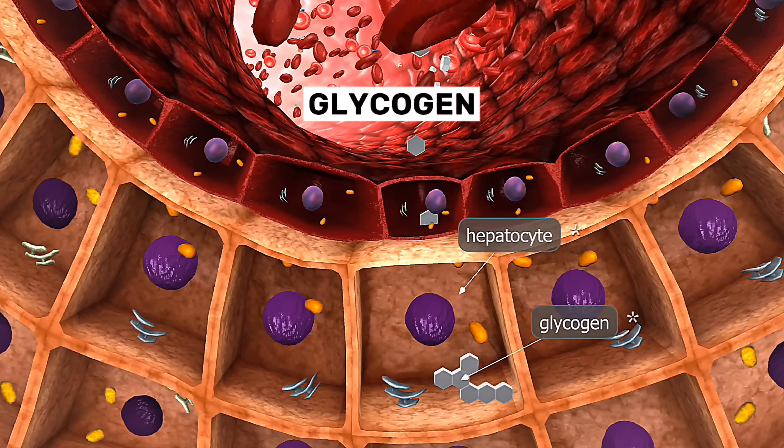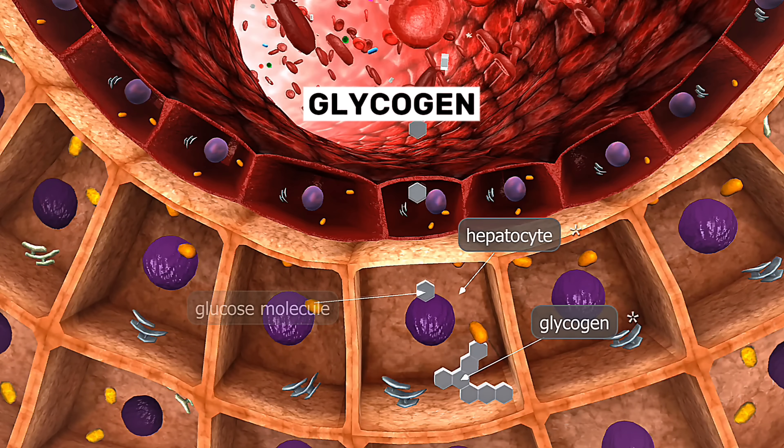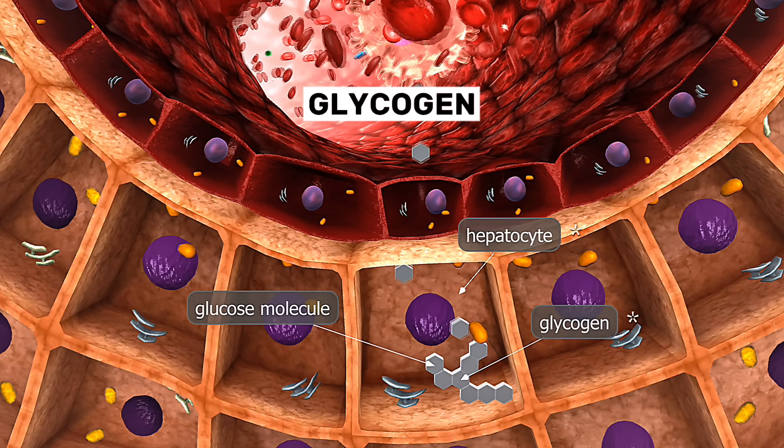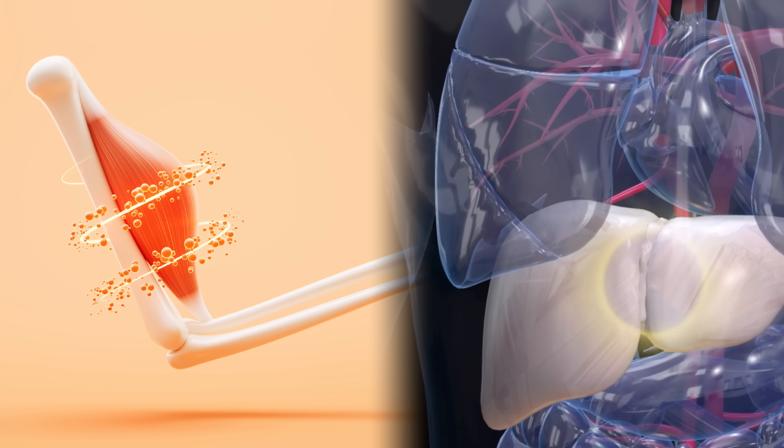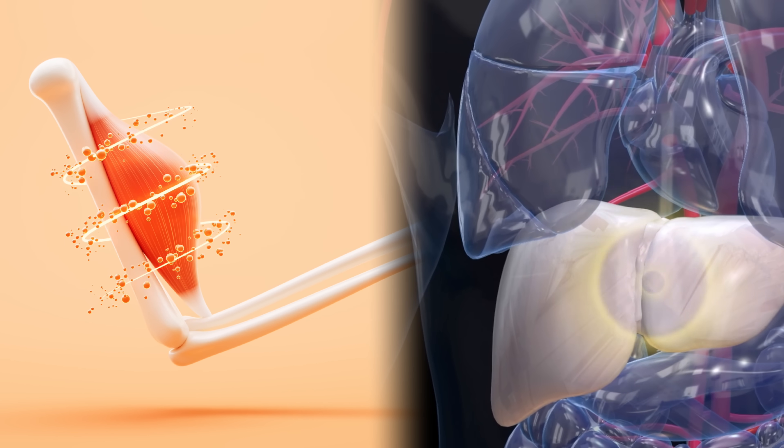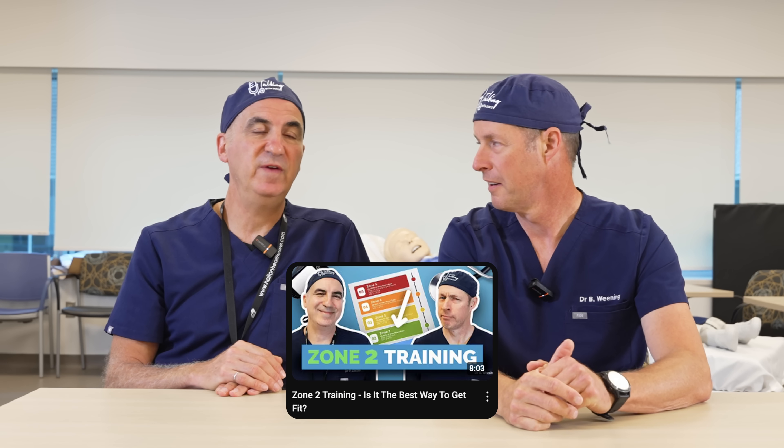The next energy source is glycogen. Glycogen is a molecule made of a whole bunch of glucose molecules — that's how our body stores glucose (C6H12O6). Glucose runs through our bloodstream but can be stored primarily in our liver and muscle as a more readily available energy source. Glycogen gets broken down to glucose, and glucose can be metabolized either with oxygen or without — aerobic or anaerobic.